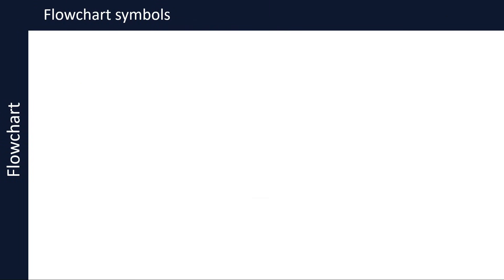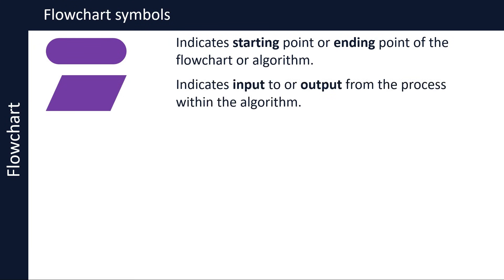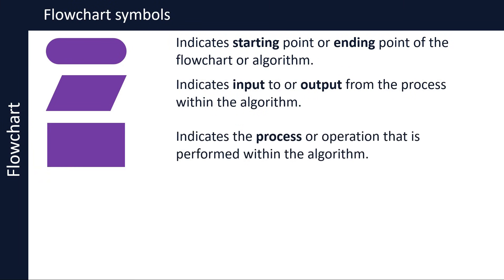Let's now look at symbols used in flowcharts. The first symbol is used to indicate the start or end of the flowchart. Flowcharts always have starting and ending points indicated by this symbol. The parallelogram symbol is used to indicate input to or output from the process within the algorithm — it denotes the external inputs to and outputs from the process or operation. The rectangle symbol is used to indicate the process or operation performed within the algorithm.